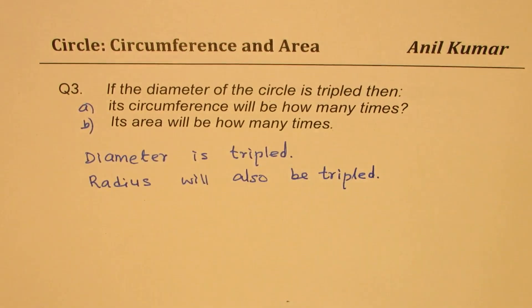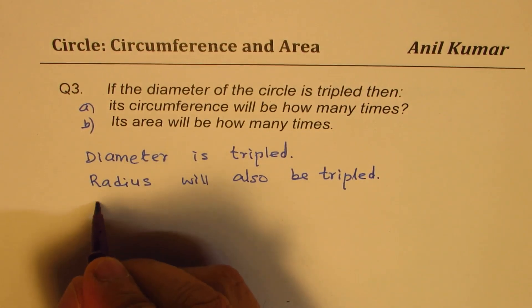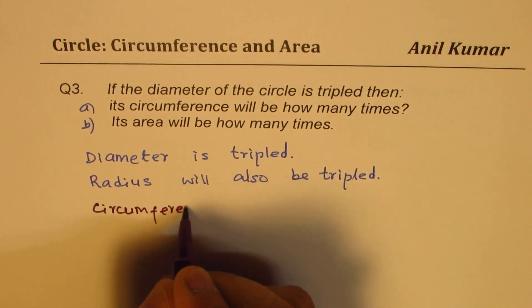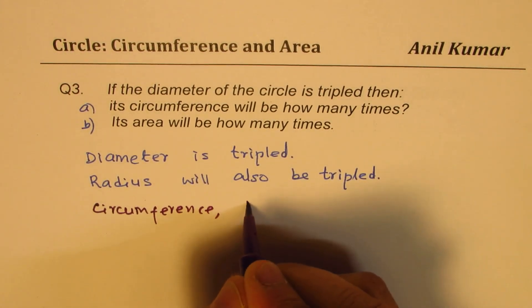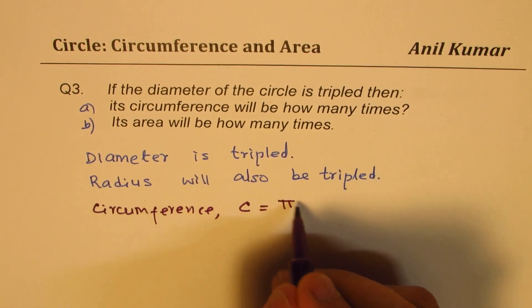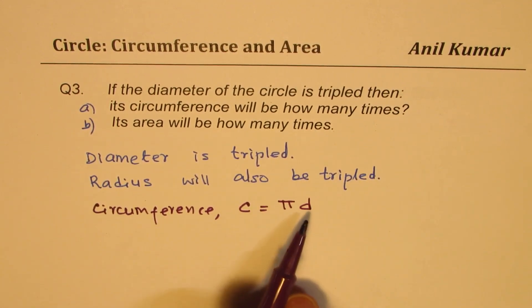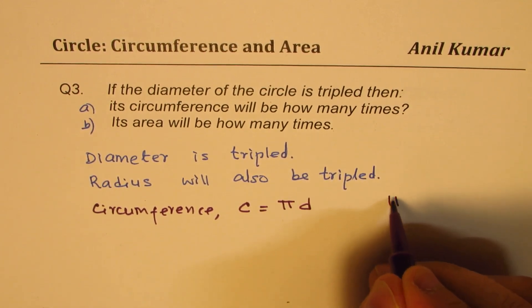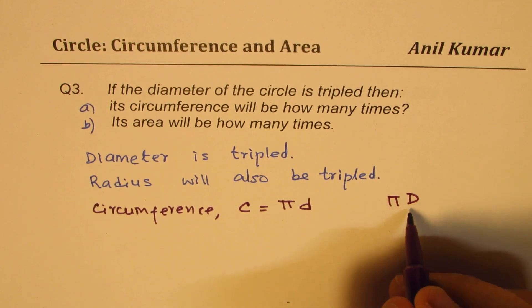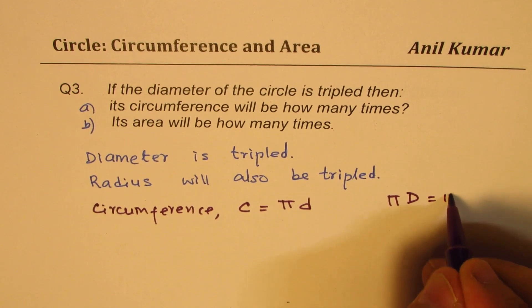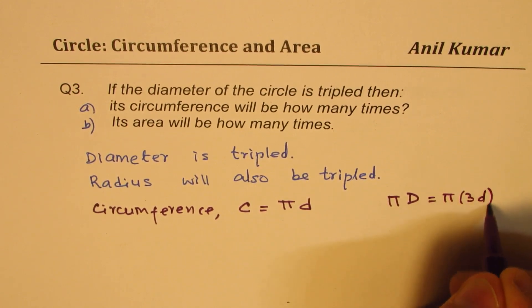What happens to circumference? Circumference C is π times diameter. So, if diameter becomes 3 times, that means we are looking for π times the new diameter, which is 3 times D — that is π times 3D.